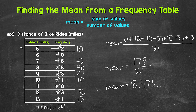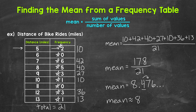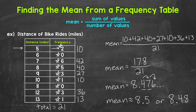That decimal continues on, so let's round to the tenths place and hundredths place for a couple of different options. Rounding to the tenths place, we have a four in the tenths place with a seven to the right, so we round up. Our mean rounds to 8.5, or eight and a half. Rounding to the hundredths place, we have a seven with a six to the right, so we round up there as well — giving us 8.48 miles.